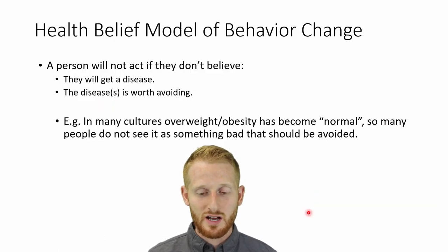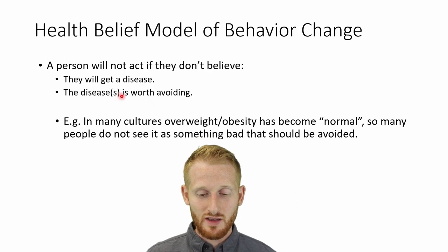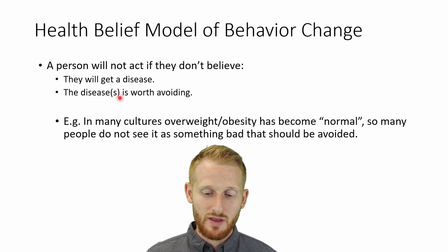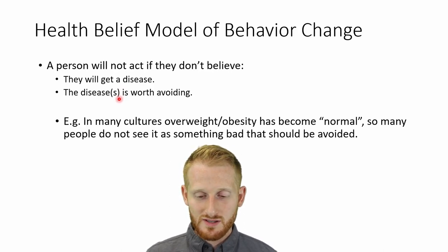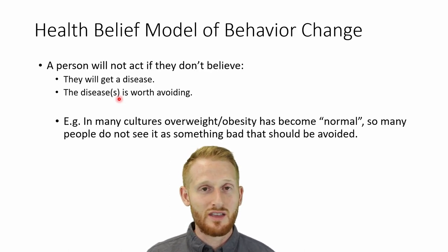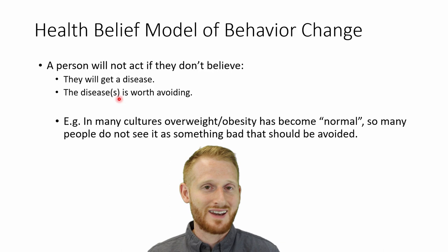The next model is the health belief model. Basically, it comes down to two things: does the person believe they will get a disease if they don't change their behavior, and do they believe that disease is worth avoiding? For instance, if somebody doesn't think smoking is going to hurt them long term — they don't think they'll get lung cancer or COPD — then they're probably unlikely to quit because they don't see a negative result in the end.